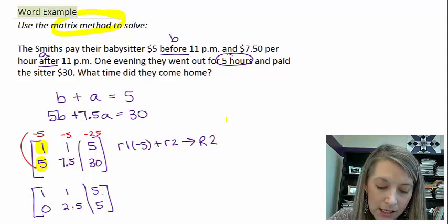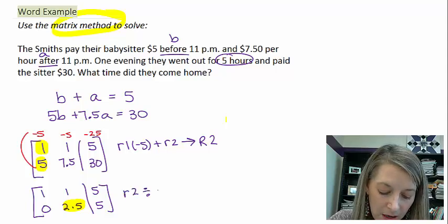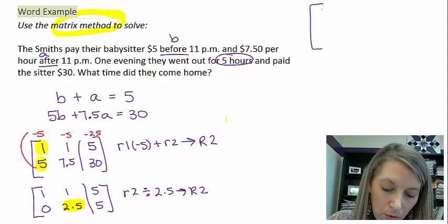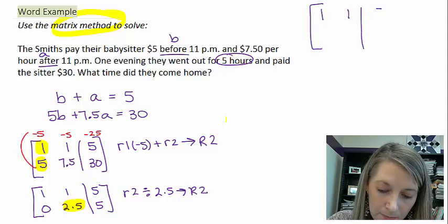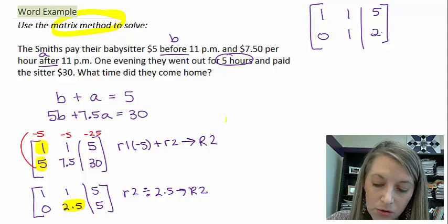To figure out what my last row is, I want to get a 1 here. So I just take row 2 and divide by 2.5. That becomes my new row 2. So my row 1 stays the same. 0, 1, 5 divided by 2.5 gives me 2.